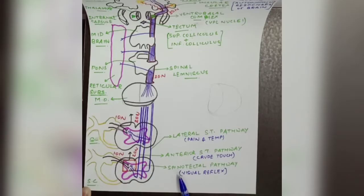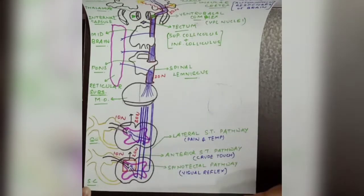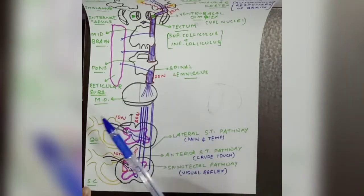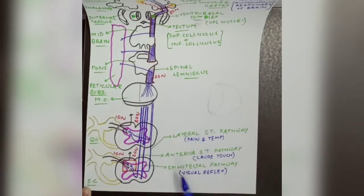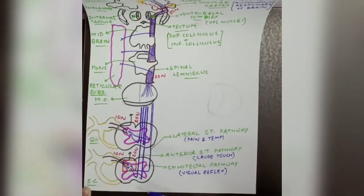We also have the spinotectal pathway, which is responsible for visual reflexes. The spinotectal pathway follows the anterolateral spinothalamic pathway to some level and extent, but ultimately terminates in the tectum, making it a different pathway. We study the spinotectal pathway alongside the anterolateral spinothalamic pathway because they travel in the same bundles. So, mainly, the anterolateral spinothalamic pathway is divided into two parts: the anterior spinothalamic pathway and the lateral spinothalamic pathway.